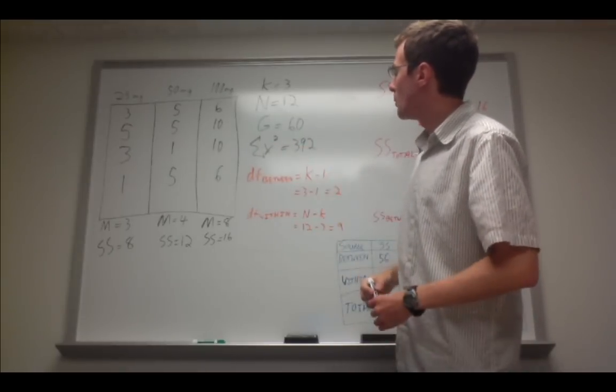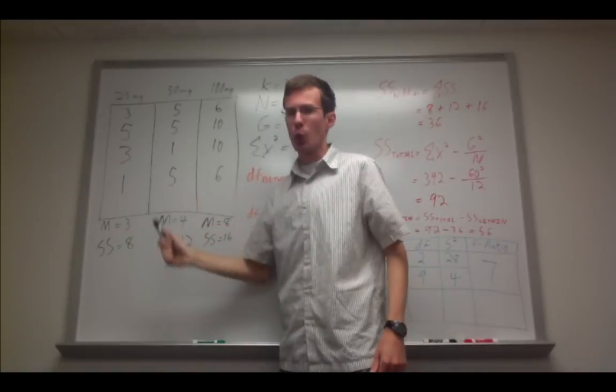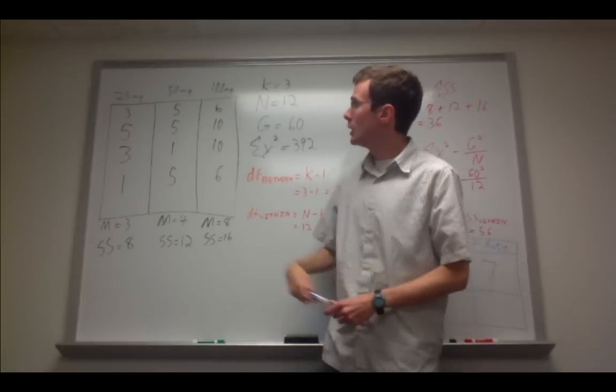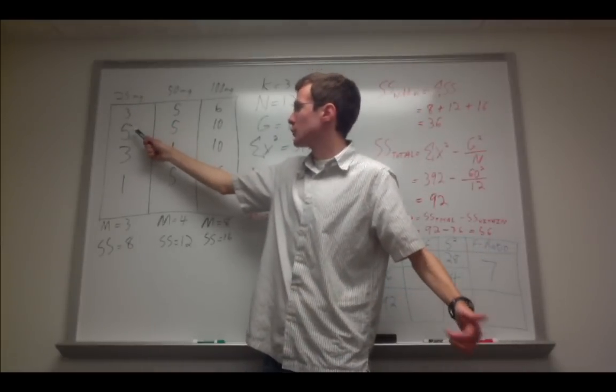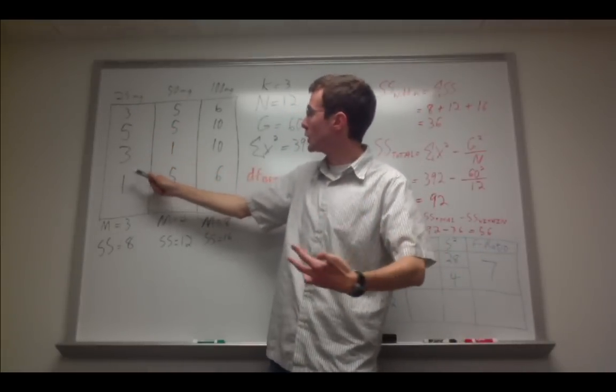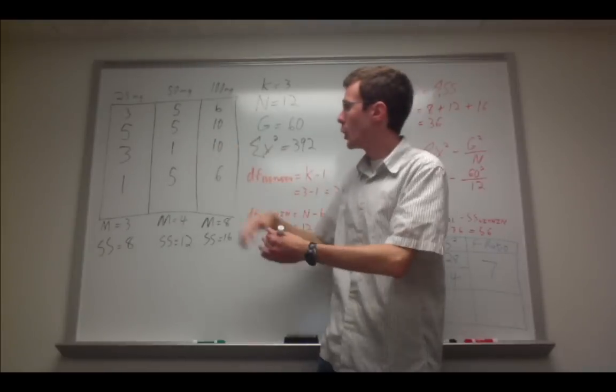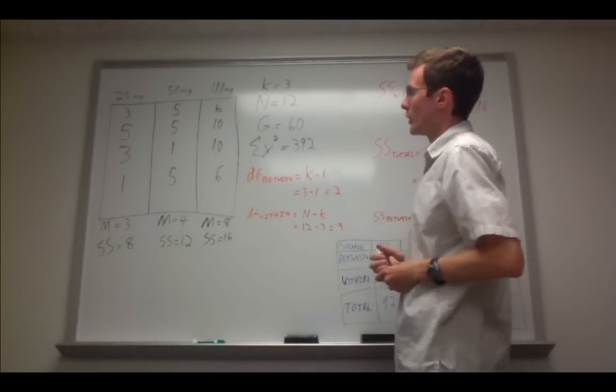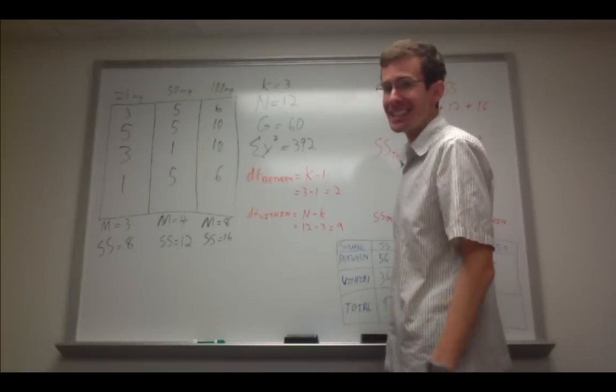Last, take the sum of each x-value squared. Remember, x traditionally represents just a single observation. So 3 squared plus 5 squared plus 3 squared plus 1 squared plus 5 squared plus 5 squared, and so on, until you add all of them up. In this case, the sum of all the x-squares is 392.